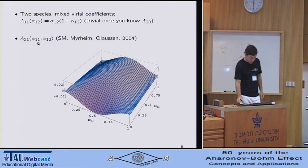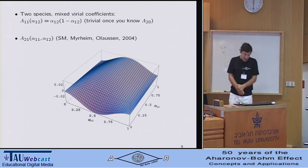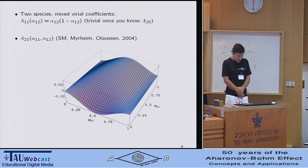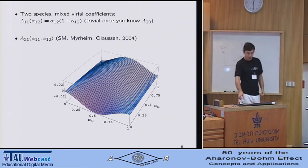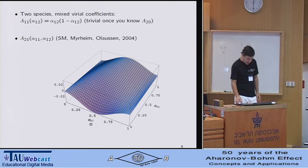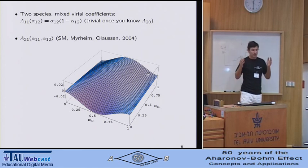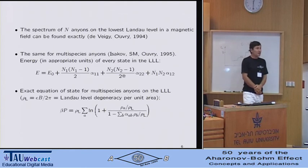The next interesting coefficient is the mixed one of third order, which depends on the intraspecies and interspecies cross-species statistics parameters. We have calculated it numerically and presented here as a plot as a function of its two arguments. There is an analytic conjecture concerning what this function might look like that goes way beyond the scope of the present talk. And I will just mention again that for alpha12 equals zero or one alike, this mixed coefficient vanishes. Again, there is no statistical interaction between the species.